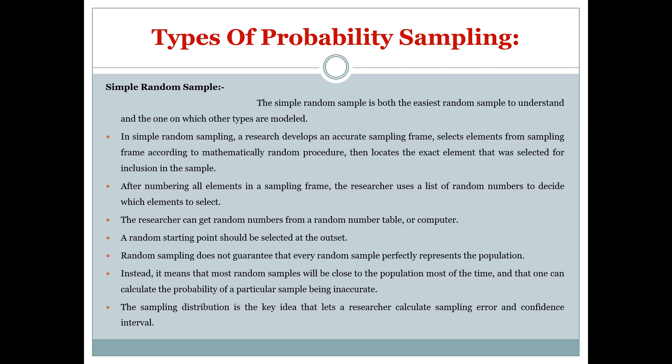The researcher can get random numbers from a random number table or computer. A random starting point should be selected at the outset, and random sampling does not guarantee that every random sample perfectly represents the population. Instead, most random samples will be close to the population most of the time, and one can calculate the probability of a particular sample being accurate. The sampling distribution is the key idea that lets a researcher calculate sampling error and confidence interval.